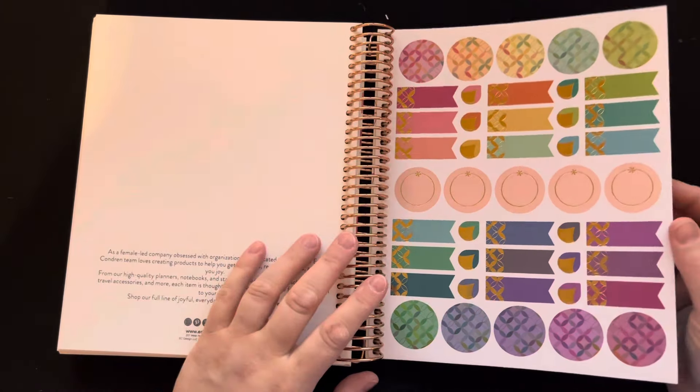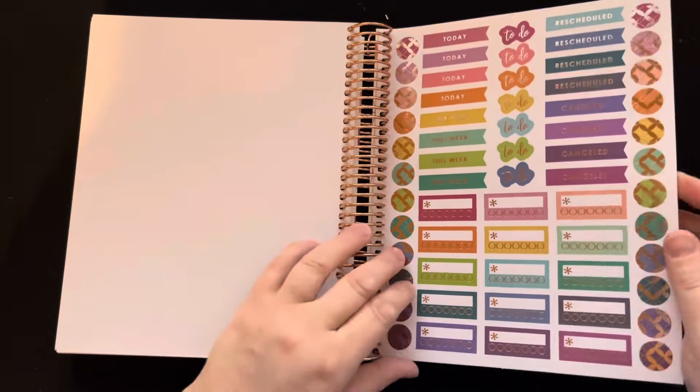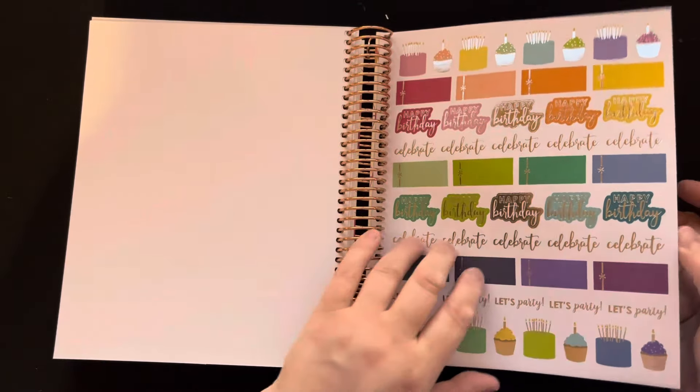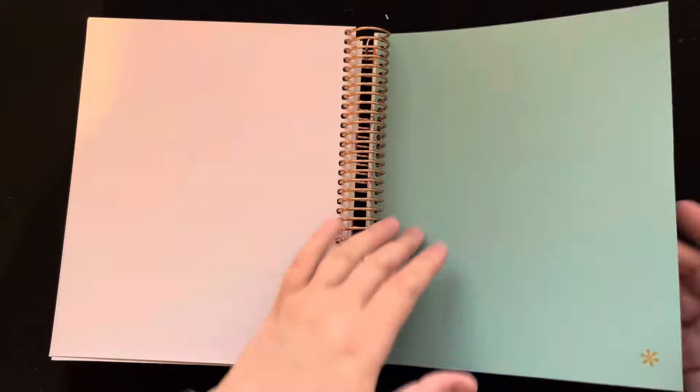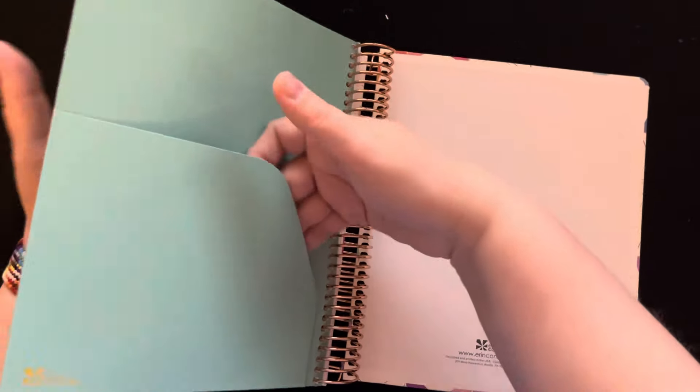And then you actually get stickers. I don't know why I didn't notice that before. You get a lot of stickers. So you get one page. It's really like, they expect you to use this like a six month planner. You get your birthday stickers, regular stickers. And then you even get a double-sided folder in the back.